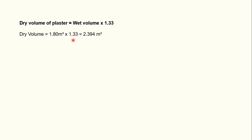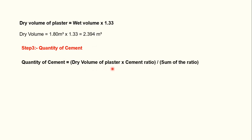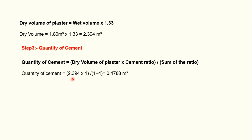To calculate the quantity of cement, we use the formula: quantity of cement equals dry volume of plaster multiplied by cement ratio, divided by the sum of the ratio. We know the dry volume, cement ratio, and sand ratio. Substituting: 2.394 × 1 / (1+4) = 2.394 / 5 = 0.4788 cubic meters.